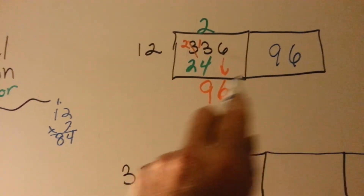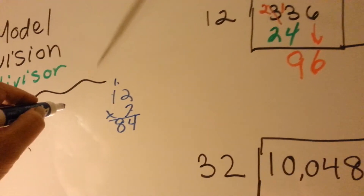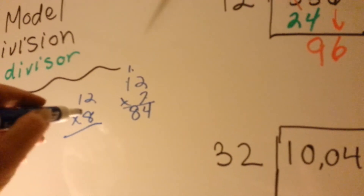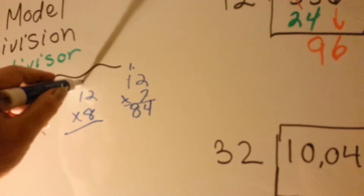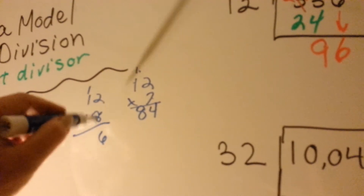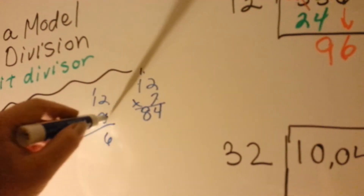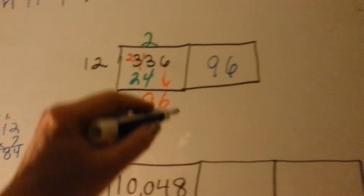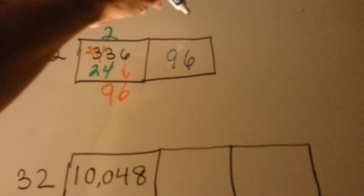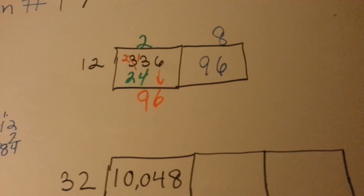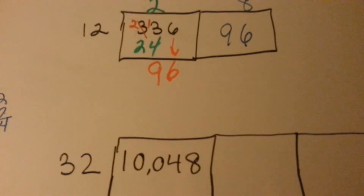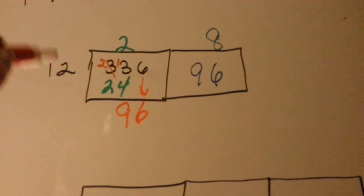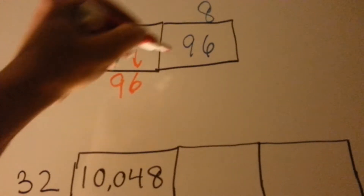Can you fit one more 12 in there? Let's see — 12 times 8. It's okay to have scratch paper or do the work on the side. 8 times 2 is 16, carry the 1, put the 6 down. 8 times 1 is 8, plus 1 is 9. So the 8 fits just right. So now what we're going to do is say 12 times 8 is 96.